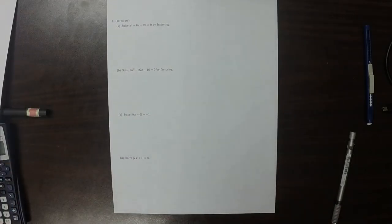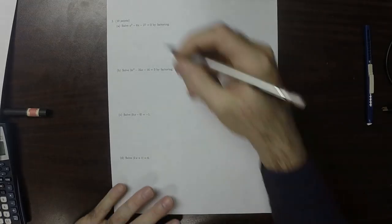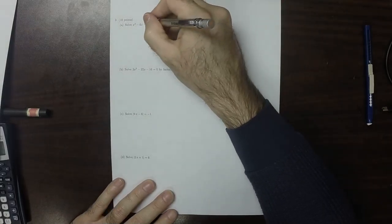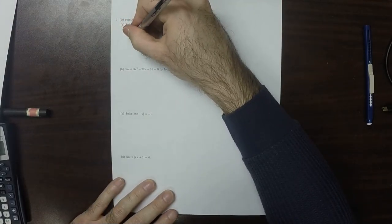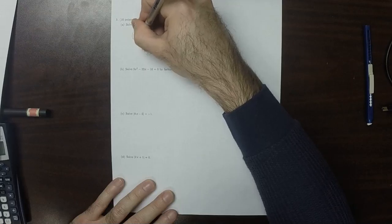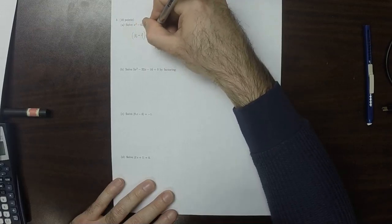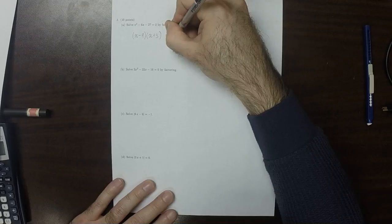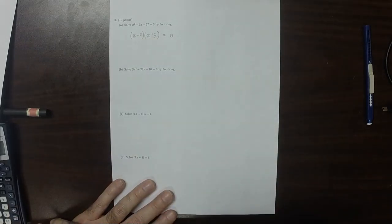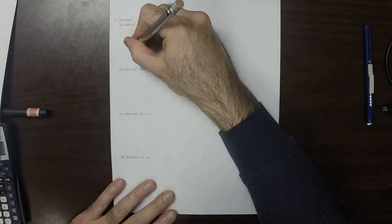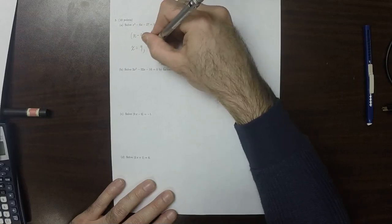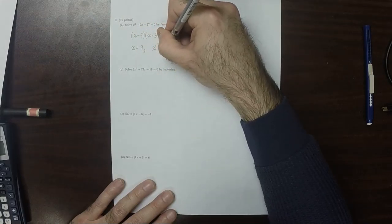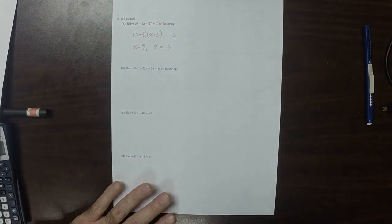And then question 3. Part a, solve by factoring. Can we think of two numbers whose product is negative 27 and whose sum is negative 6? Sure. How about x minus 9 times x plus 3 equal to 0. So the solutions are 9 and negative 3.